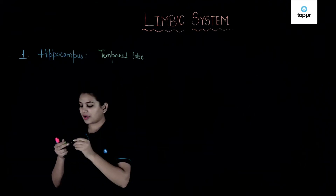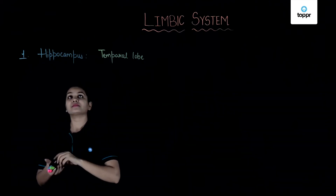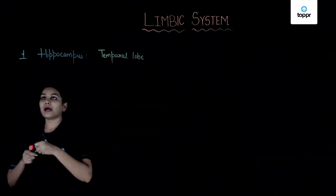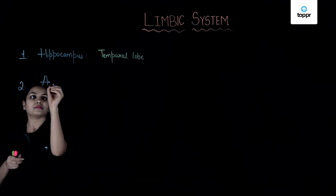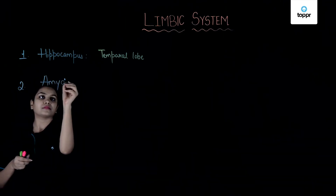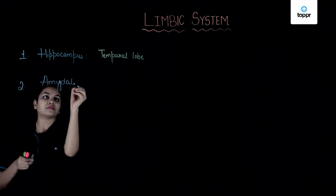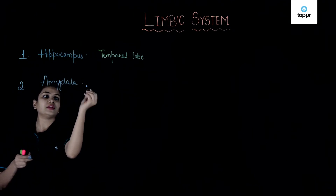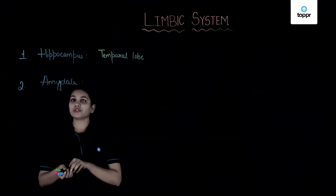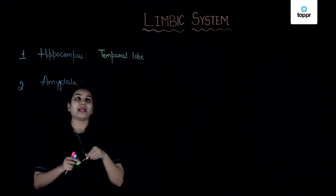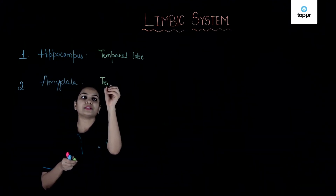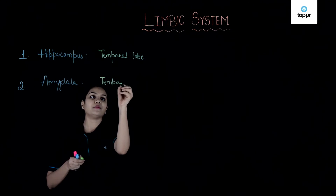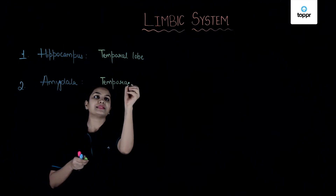The next part is the amygdala. This part is also seen at the tip of the temporal lobe, so it is also found in the temporal lobe of the cerebrum.